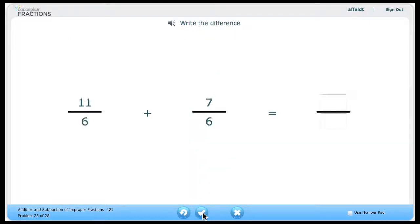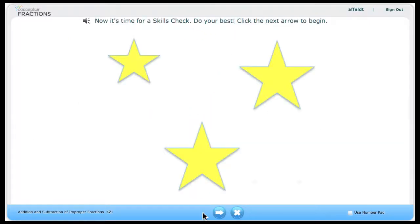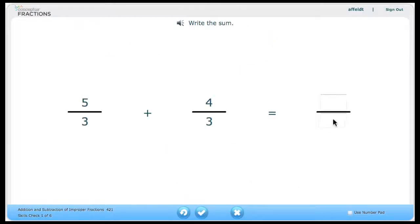Once Sarah completes all of the practice examples, she will come to the formative assessment. Every activity contains a formative assessment. These assessments consist of six examples. Although students receive strategic feedback when working in the practice examples, during the formative assessment they only receive feedback that tells them if their answers are correct or incorrect.